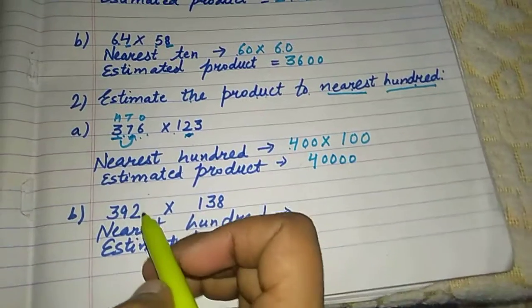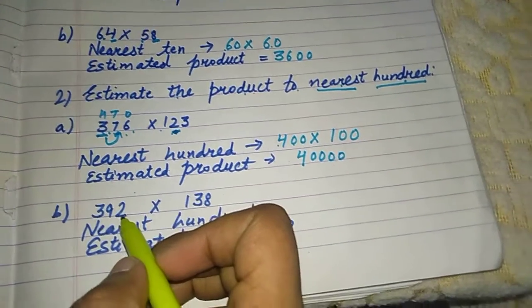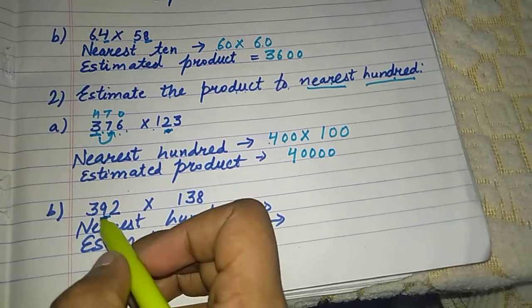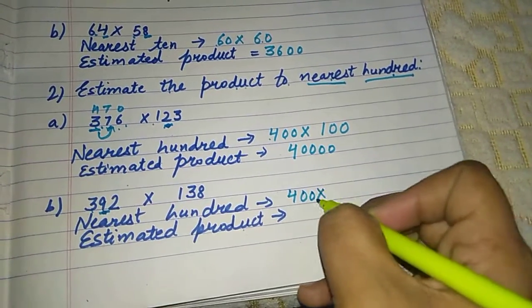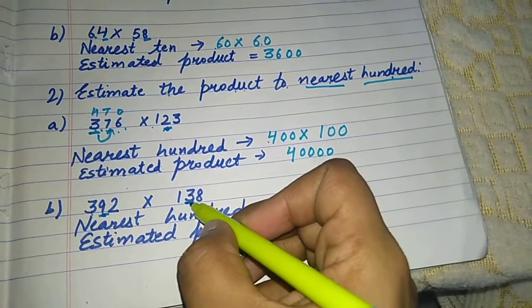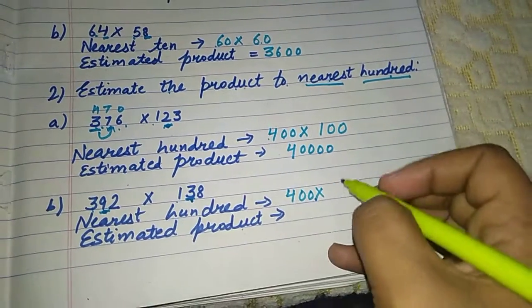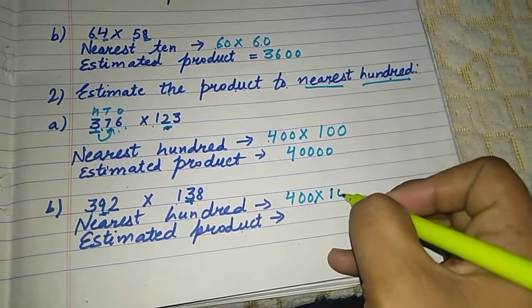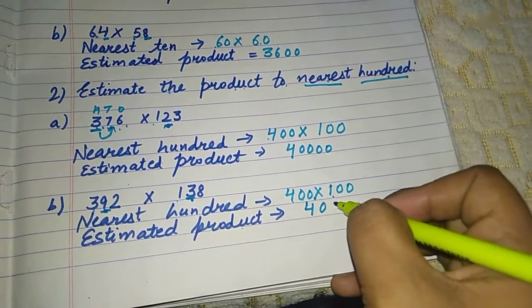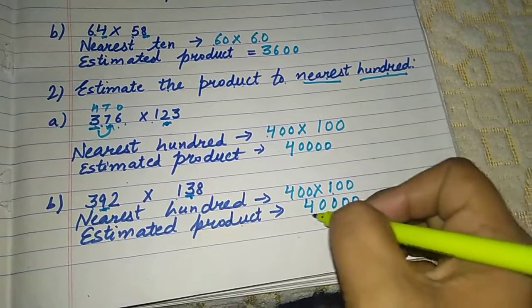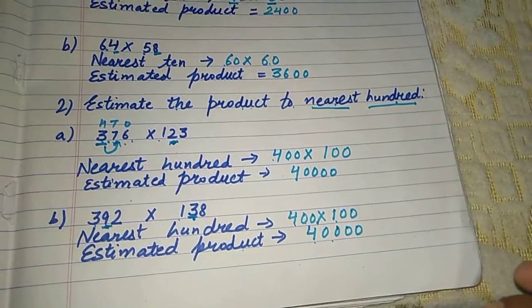Similarly, you have to check it here. It is a three hundred ninety two. Nine is a strong number. It will give one to three. It is a four hundred. Multiply three. Three is a weak number. So it is a one hundred. Again, it has same answer. Here are the four zeros. That means forty thousand is your answer.